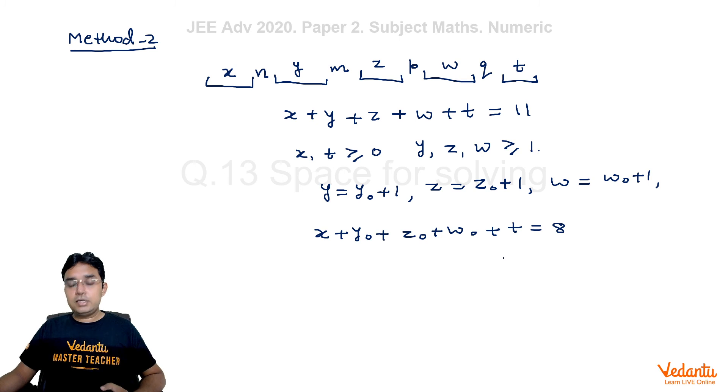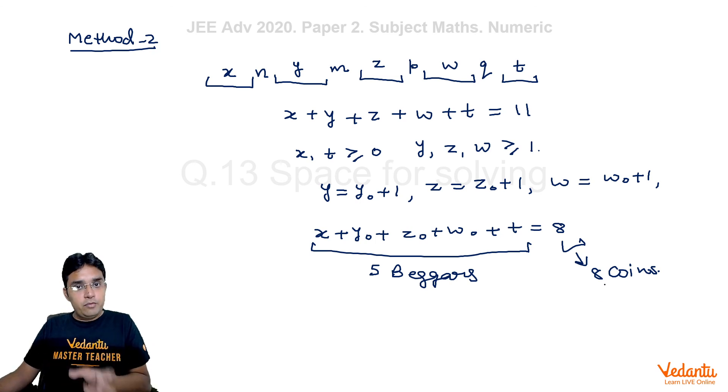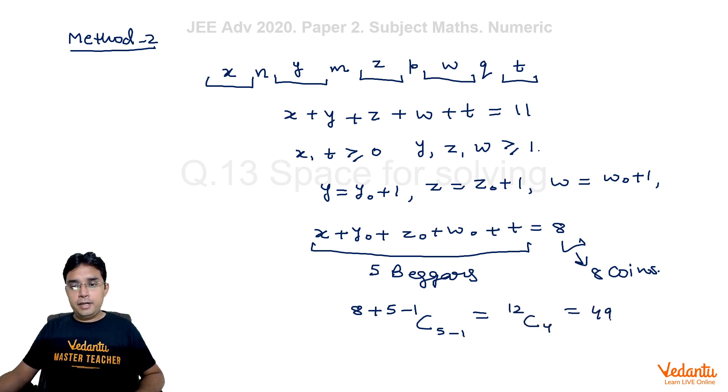Now, all variables are such their values can be greater than or equal to 0. So this is a perfect condition for non-negative integral solutions or you can say beggar coin method. We can assume like these 5 are the beggars and 8 are the identical coins. So in how many ways we can distribute these 8 coins among 5 beggars? That direct formula 8 plus 5 minus 1 C 5 minus 1. So you can check it also comes out to be 12C4 only which is 495.